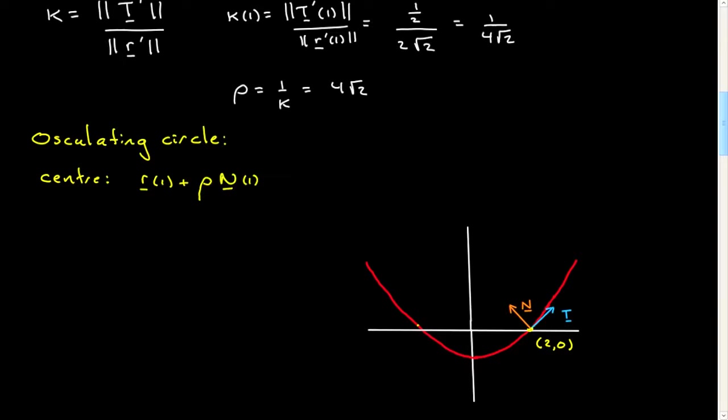So we're at this point, this is R of 1, our point in question. This will always be the point on the curve. And we're going to move a distance rho in this direction.